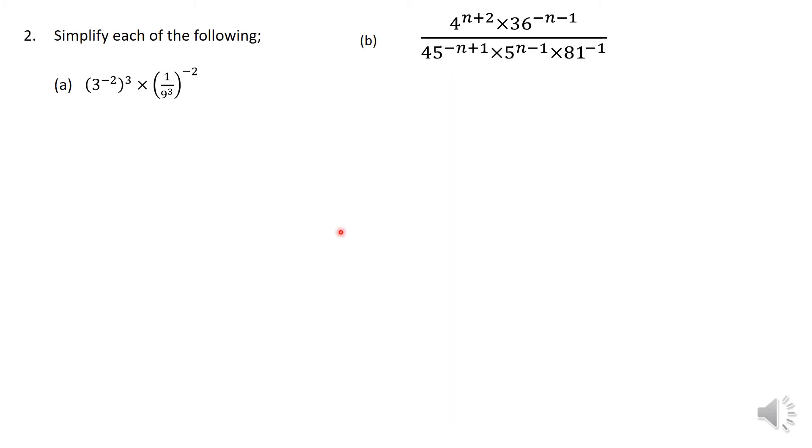So we have 2 more here in this particular slide. You are supposed to simplify each of them. Very important statement here. The base is not a prime number, like for example 1 over 9 cubed, or 36 here, or 81, or 45, or that 4. Best perhaps that you write them as prime factors, or express them as a product of its prime factor.